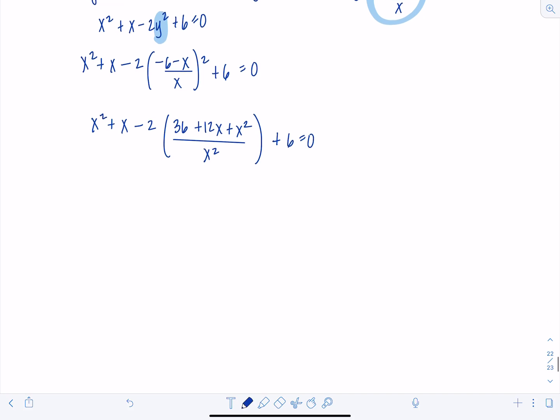And then you want to clear the fractions out. So you multiply everything by an x squared and you realize things are getting out of control. So you have x to the fourth plus x cubed minus 72 minus 24x minus 2x squared plus a six x squared is zero. And you're super duper stuck. So what's the other thing to do? Maybe something you wouldn't have noticed.